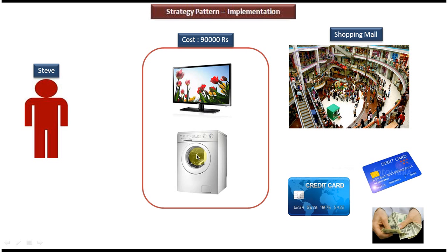From these three options, he has to choose one and pay the money at the bill counter. As per the strategy design pattern, for a particular task there will be multiple solutions, and the user has to choose one solution at run time. So here, to pay the bill, Steve has three options and he must choose one. This is the best example of the strategy design pattern.